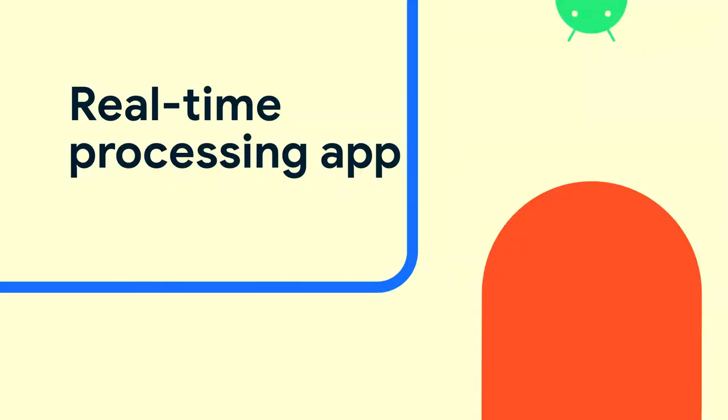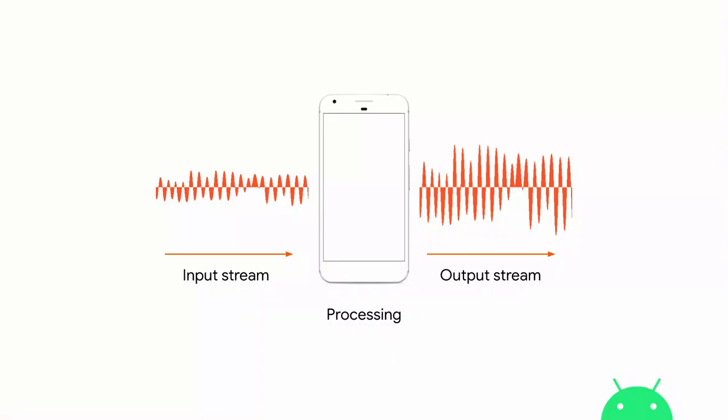Now onto the meat of our talk: we are going to build a real-time processing app. Before we get into the actual live coding, I'll explain exactly what the app does. We have a Pixel 2 device connected via a USB audio interface, taking input from a music box with a piezoelectric transducer.